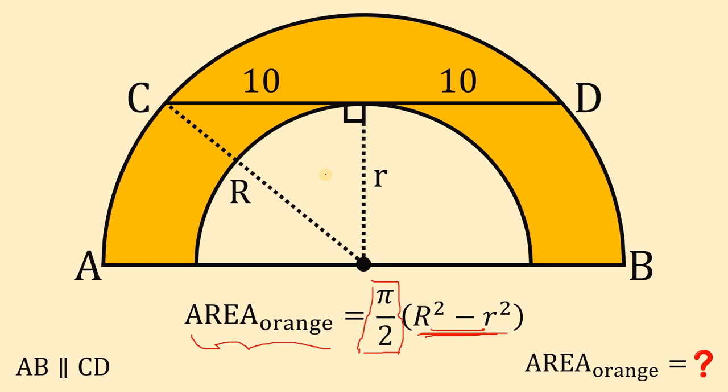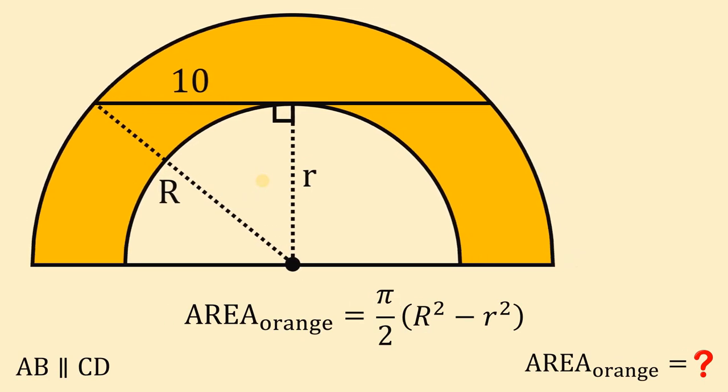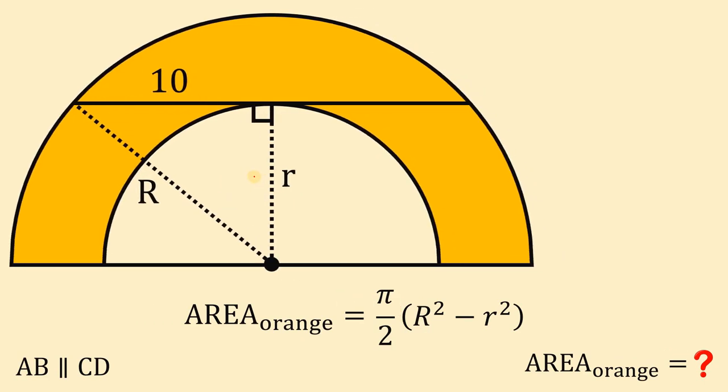Looking at this figure, we can see a right triangle with sides 10 and r, and a hypotenuse of capital R. Since we have a right triangle, we can now use the Pythagorean theorem.